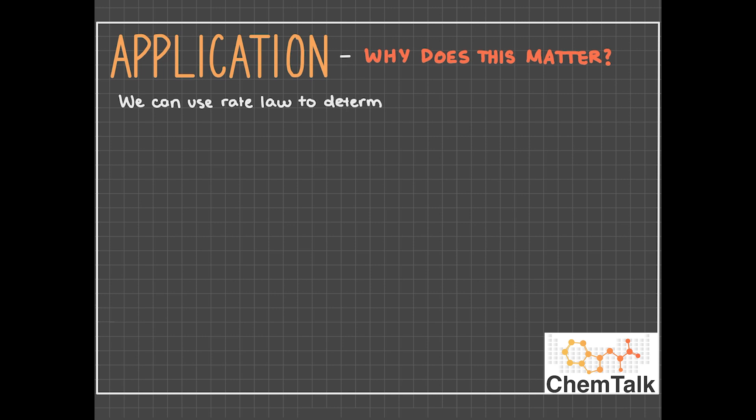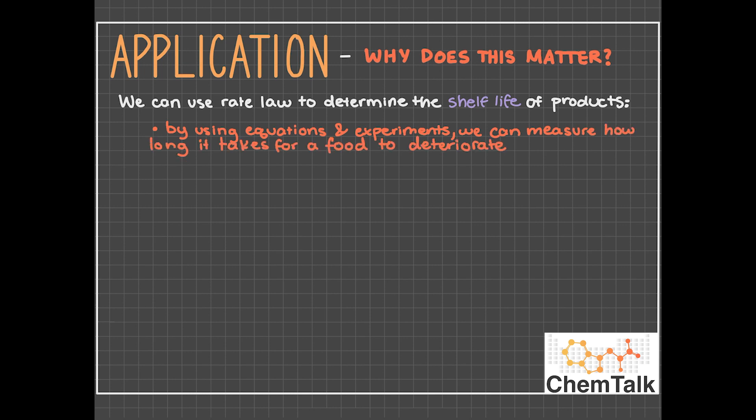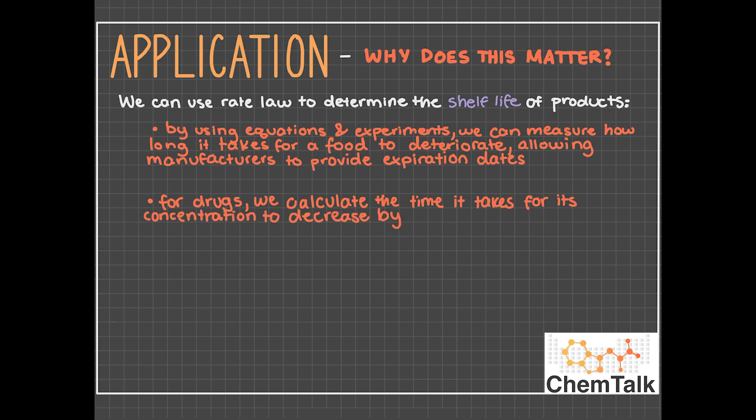Now let's discuss why rate law really matters. Well, we can actually use rate law to determine the shelf life of foods and drugs. By using rate law equations and carrying out experiments, we can determine the rate at which a food will deteriorate, allowing manufacturers to provide an expiration date for the item. The shelf life of drugs is determined by calculating the time it takes for its concentration to decrease by 10 percent from its original concentration. So rate law is really helping us consume products that are safe for our bodies and they tell us when we can consume these products.